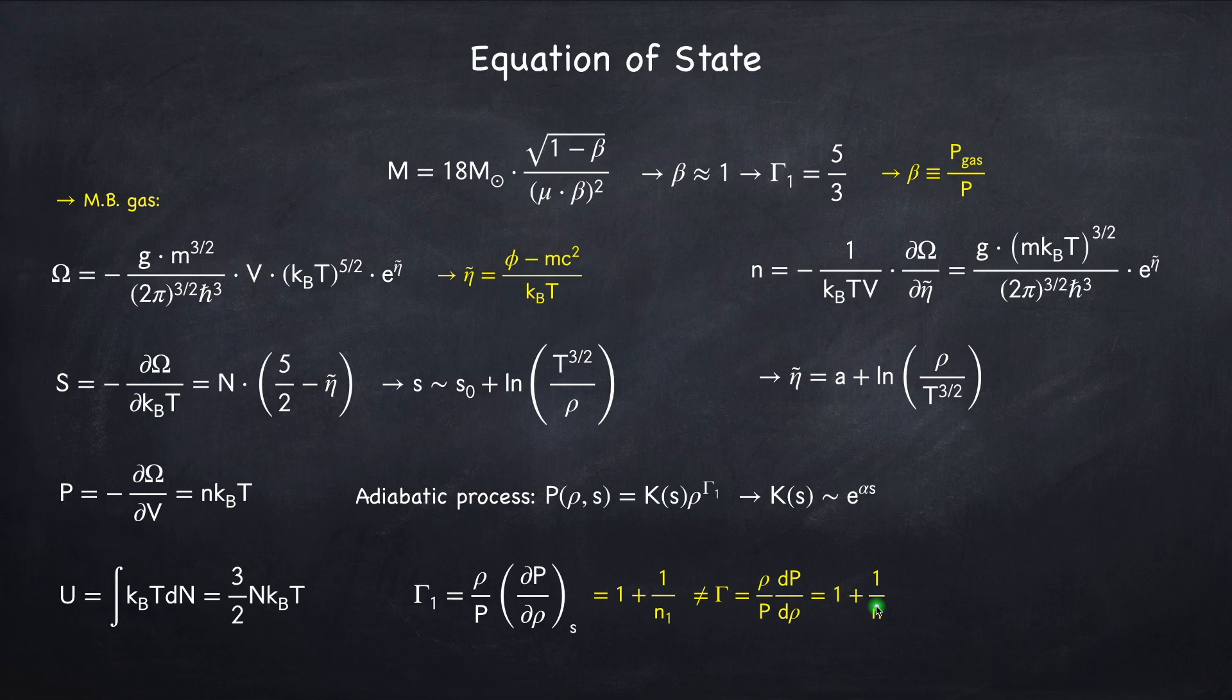Gamma 1 depends on the exact equation of state. For a monatomic Maxwell-Boltzmann gas, we know that gamma 1 is five-thirds, which means n1 is three halves.